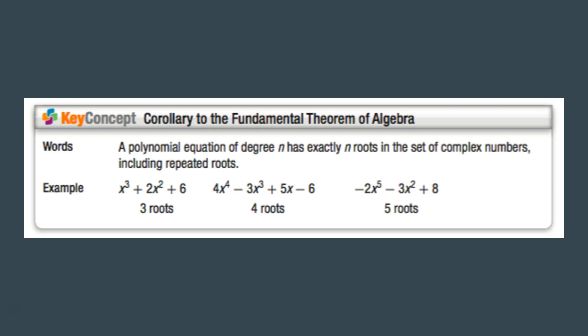Alright, so let's just go over a quick concept here. The highest degree that you have will determine the number of roots. As you see here, we have the highest degree of 3, therefore we have 3 roots. Highest degree is 4, 4 roots. Highest degree is 5, therefore we have 5 roots.